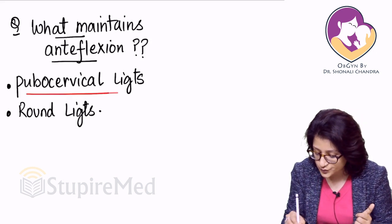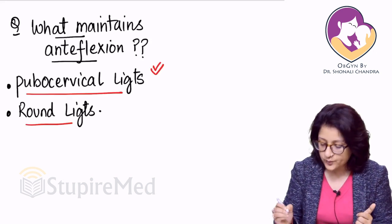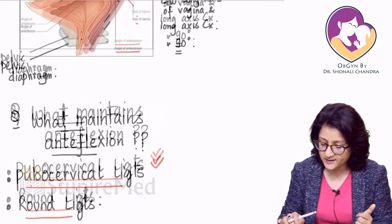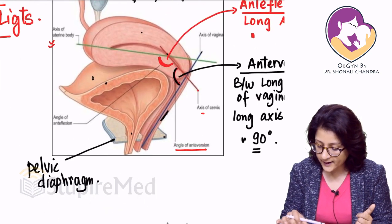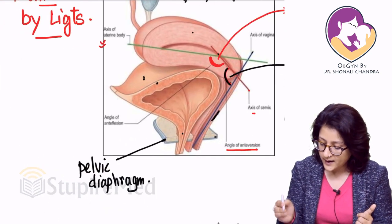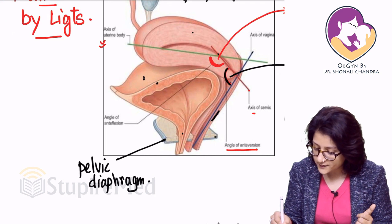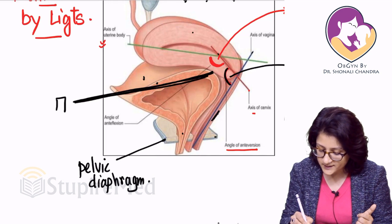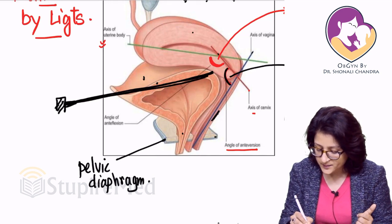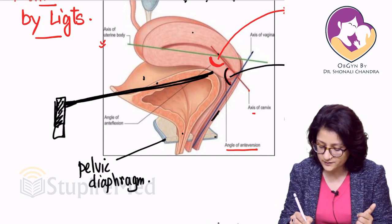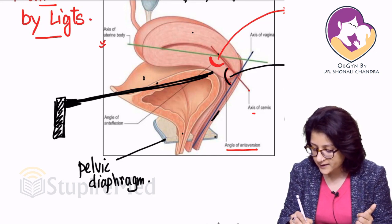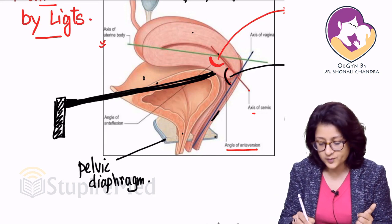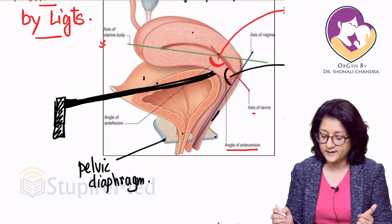More importantly, if you choose one, choose the pubocervical ligaments — they extend from the pubis bone to the cervix. As you can see in the figure, there is a set of ligaments extending from the cervix anteriorly to the symphysis pubis. Those are the pubocervical ligaments.